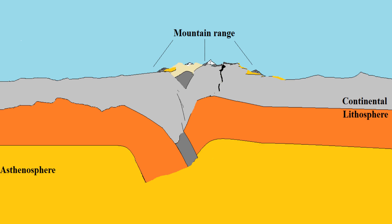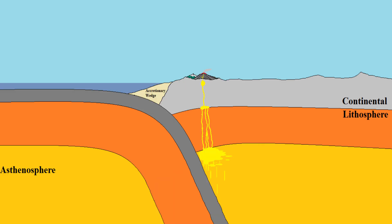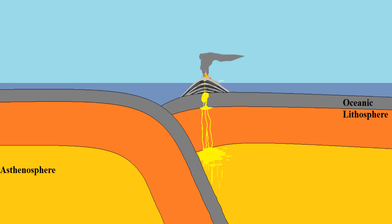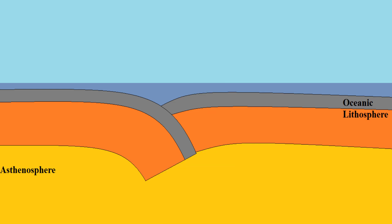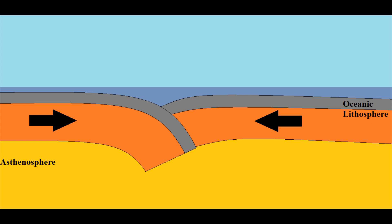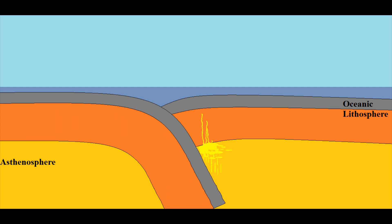The last type of plate boundary is the convergent plate boundary, and there are three different types of these boundaries: continental-continental, oceanic-continental, and oceanic-oceanic convergent plate boundaries. Let's start off by looking at oceanic-oceanic convergent plate boundaries. This is where two plates made up of oceanic crust are coming together in a collision. Typically, the denser of the two oceanic crusts will end up diving below the other one in a process called subduction.